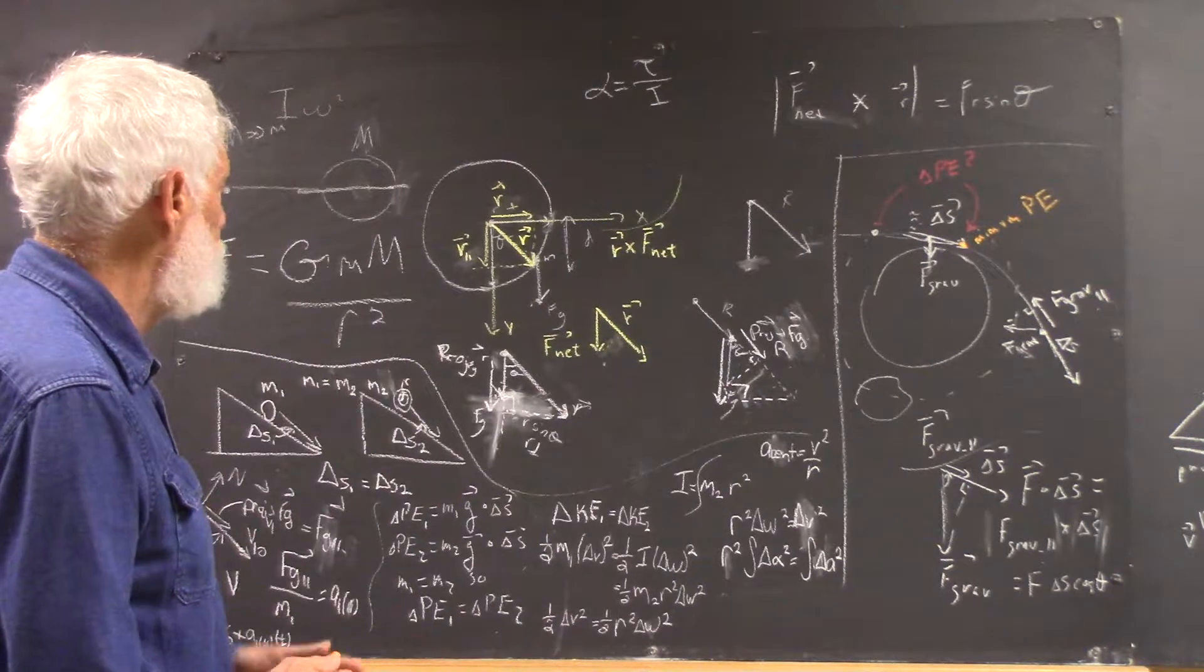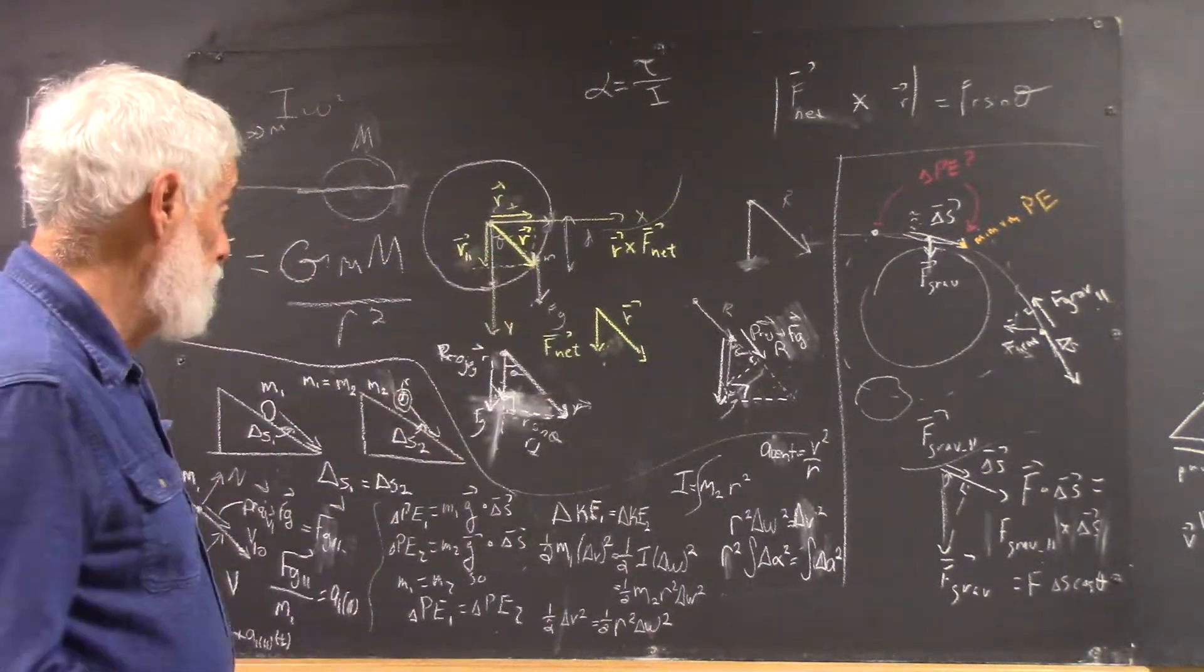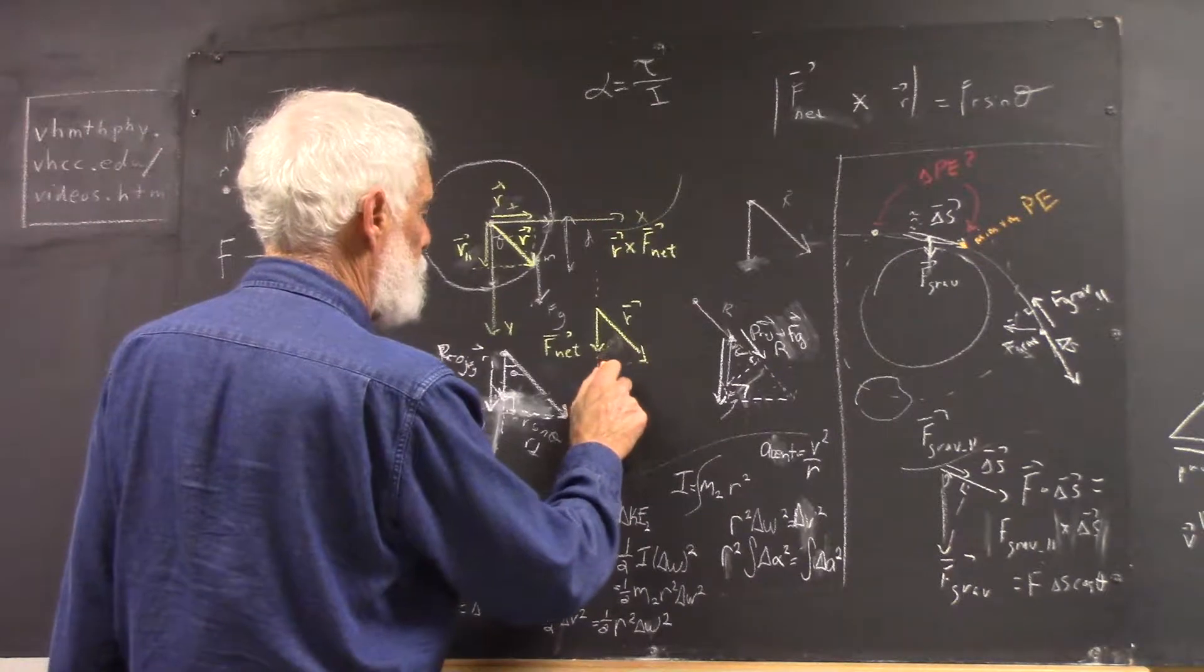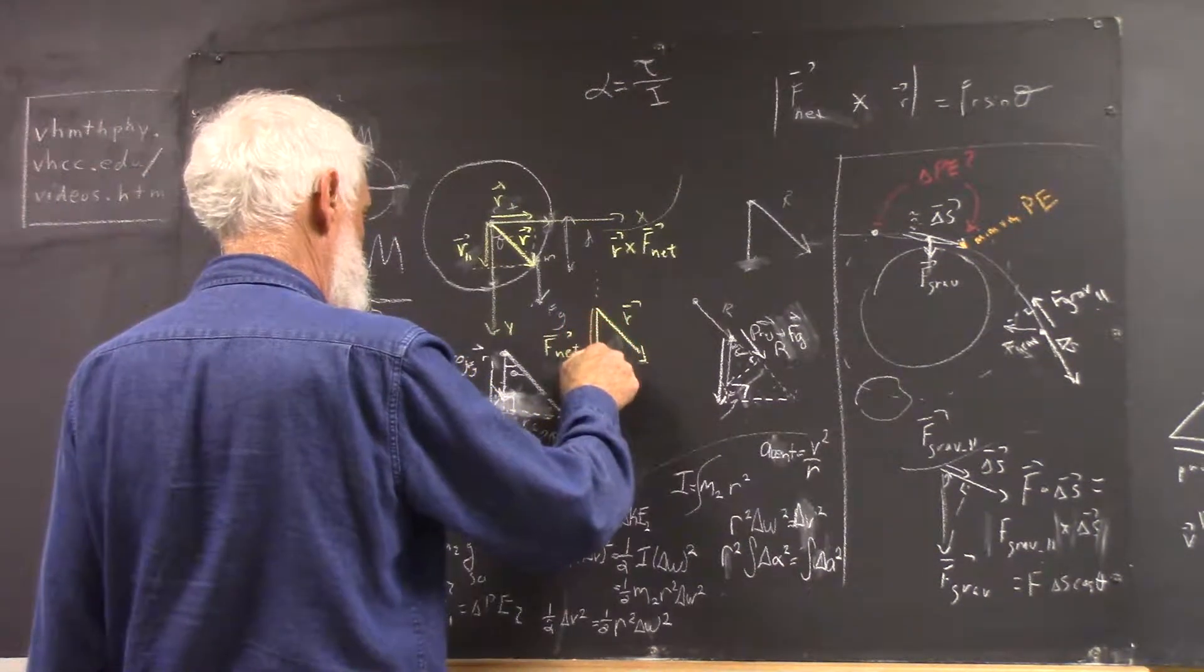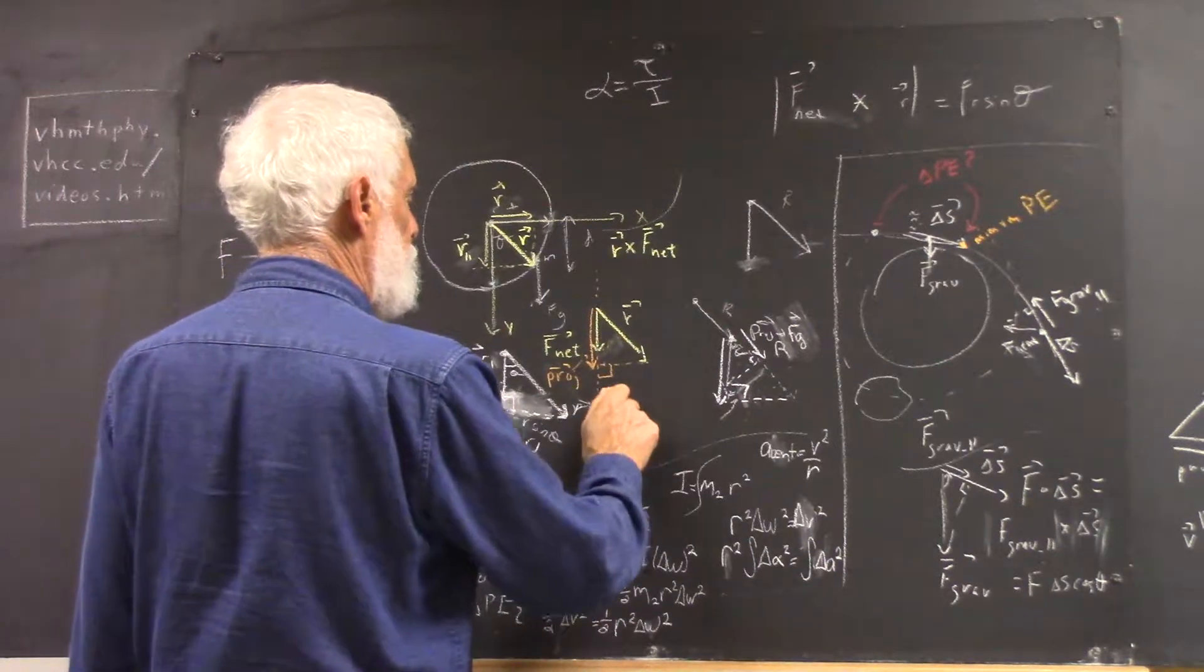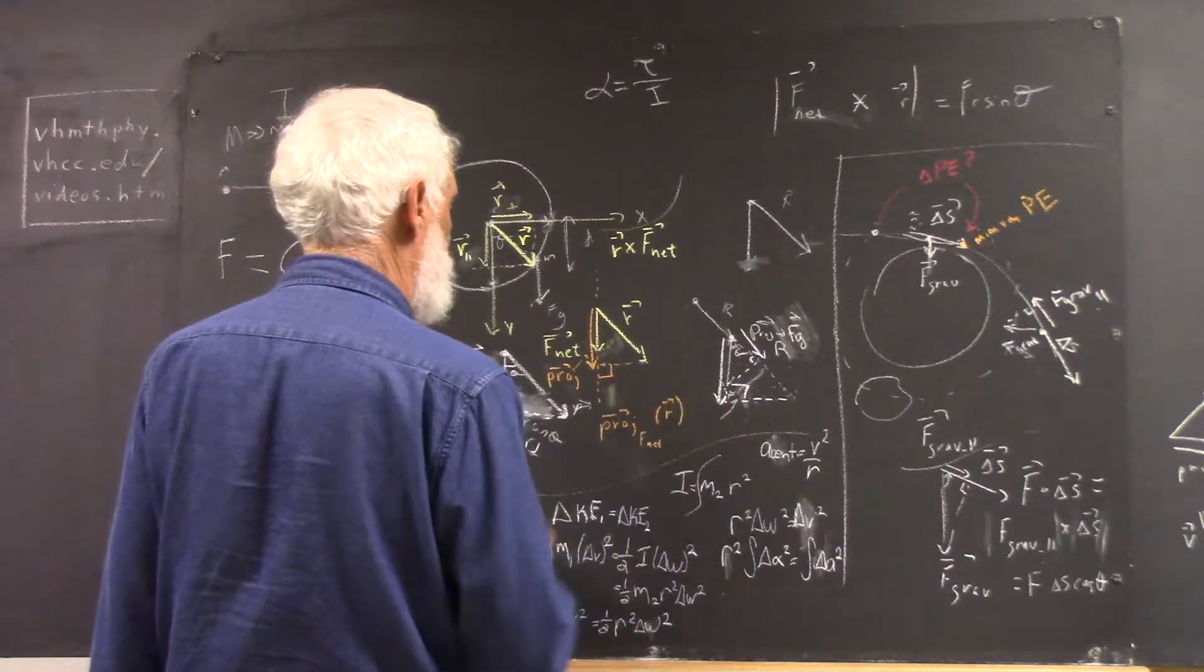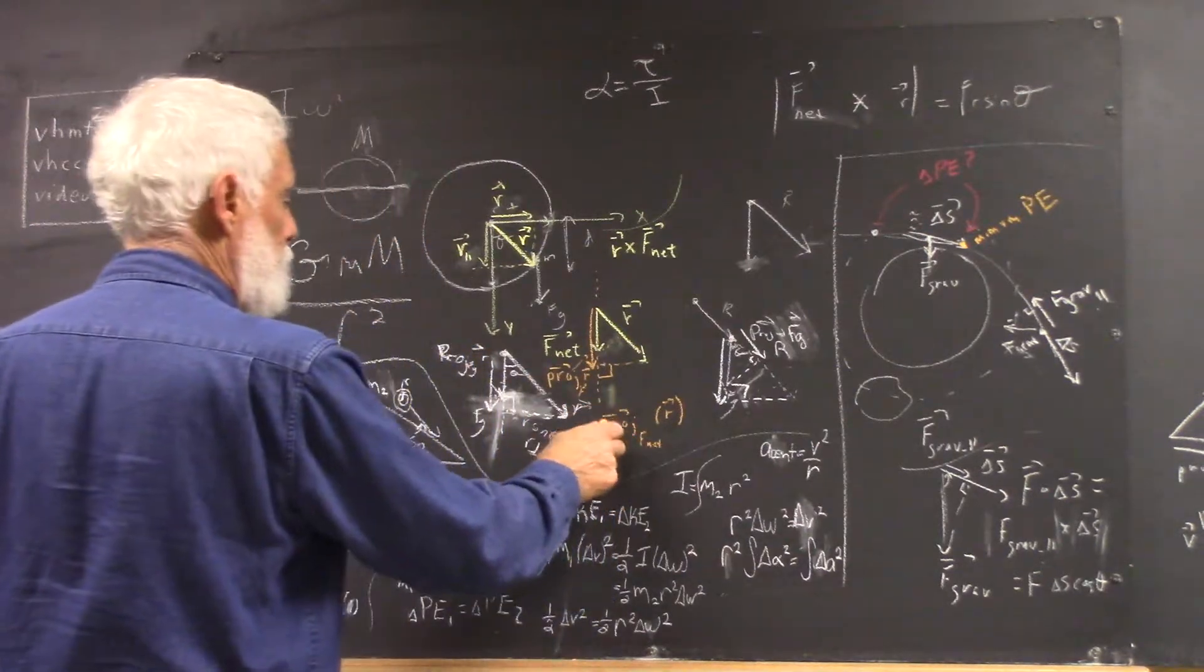The problem talks about r perpendicular. So we really want to get the r perpendicular, which is the component of r perpendicular to f-net. Now, if we extend the line of f-net, and then project the tip of the r vector onto that line, we'll have a right angle here, and our projection is here. Now, that's the projection. I want to label it there. Onto f-net of the r vector.